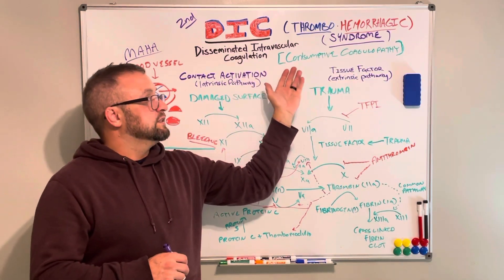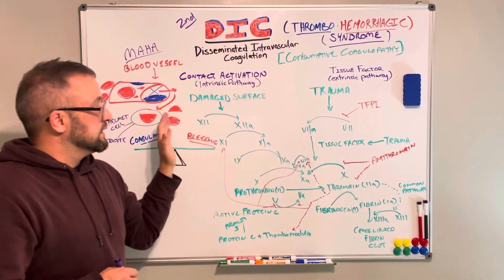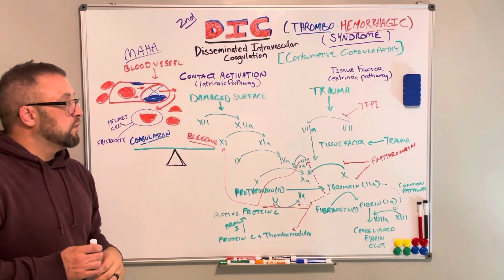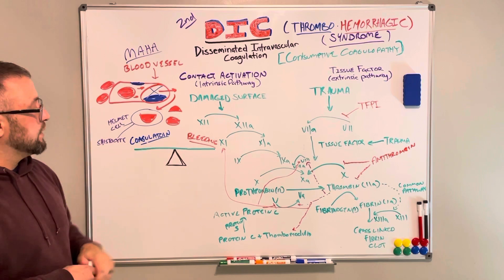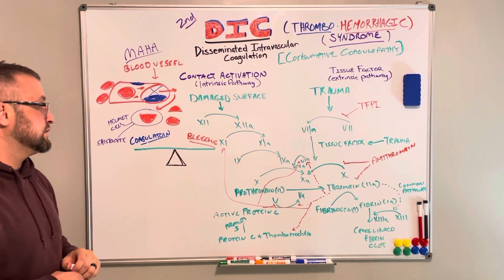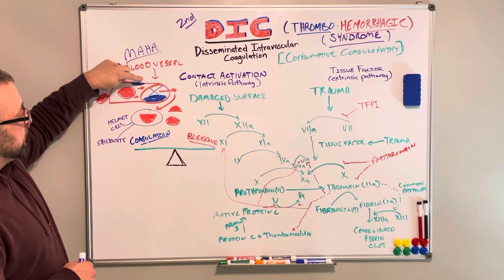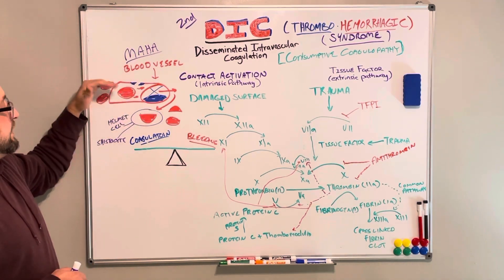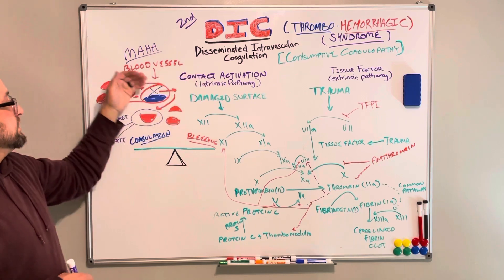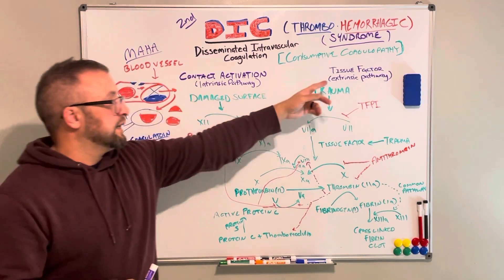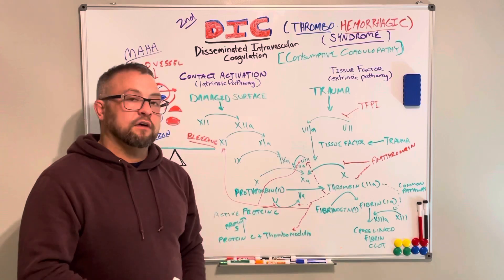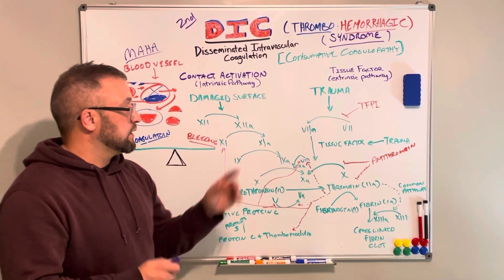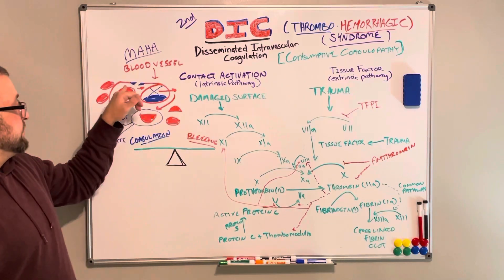It's also categorized as a consumptive coagulopathy because it consumes your platelets and all of your clotting factors. Your body lives in a balance between coagulation and bleeding. If there were an injury outside of the endothelial wall where the blood runs, there is collagen, and in that collagen, there is tissue factor. This tissue factor activates clot formation — when your blood encounters tissue factor, it signals the need to form a clot so you don't bleed to death.